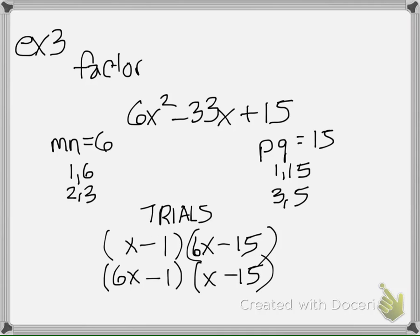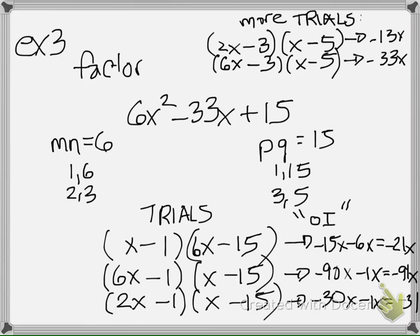So that's one set, you can keep going with your 2's and 3's, you could have 2x minus 1 and x minus 15. So you take those trials and then you try to OI each one you have. Nothing that actually works. So up at the top I've got two more trials that I tried out which we OI'd and we can see that the final answer is 6x minus 3 times x minus 5.